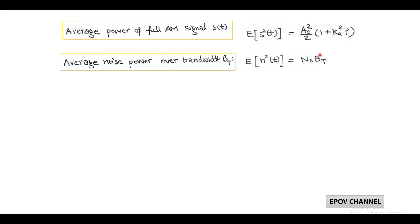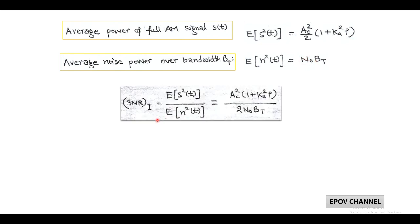The input or pre-detection SNR is equal to E[S²(t)] / E[N²(t)], which equals AC²·(1 + KA²·P) / (2·N₀·BT).